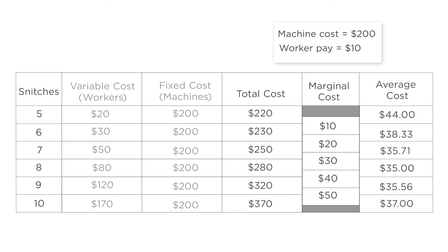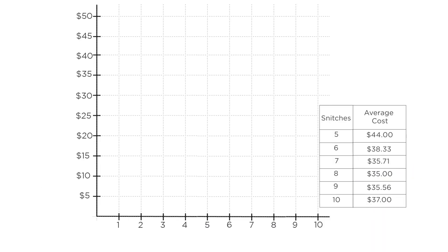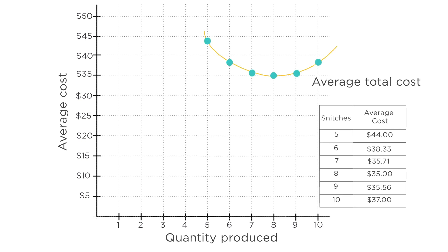Did you notice anything a bit strange about what happens when the average cost of production increases? The average cost drops as production goes from five to six to seven to eight snitches, and then it rises as the firm produces nine or ten snitches. Graphically, if we have average cost on the vertical axis and total quantity produced on the horizontal axis, the graph of average cost for snitches has a U-shape. Why is this? Check out the next video to explore this question.